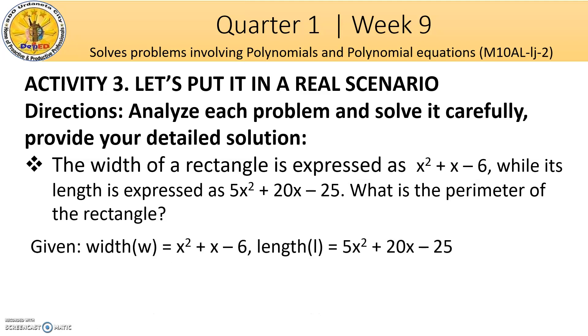This is our given. The perimeter of a rectangle is twice the width plus twice the length.